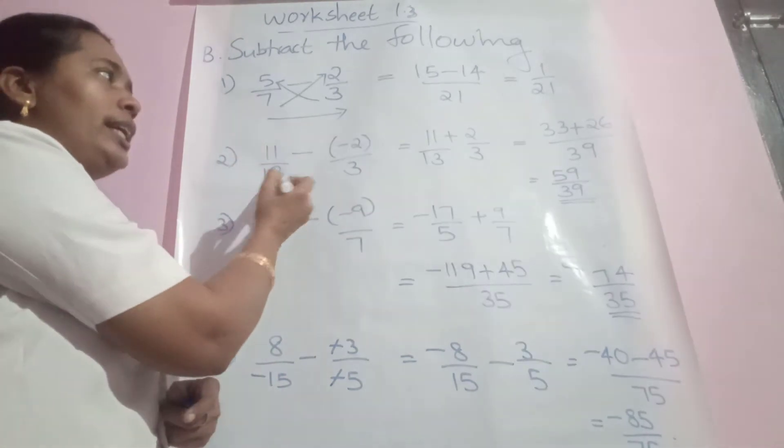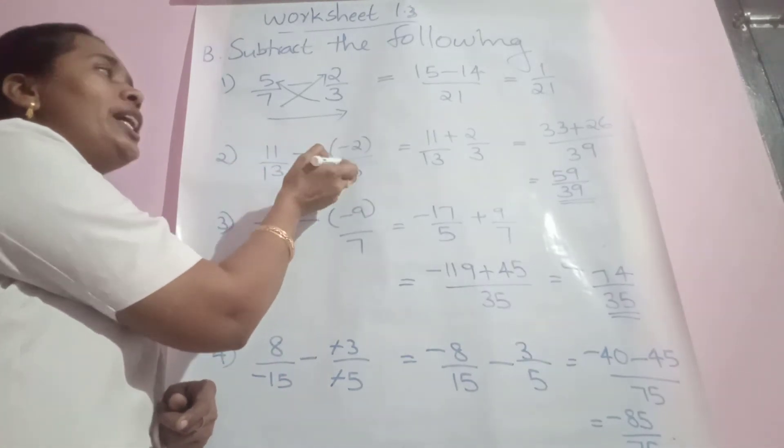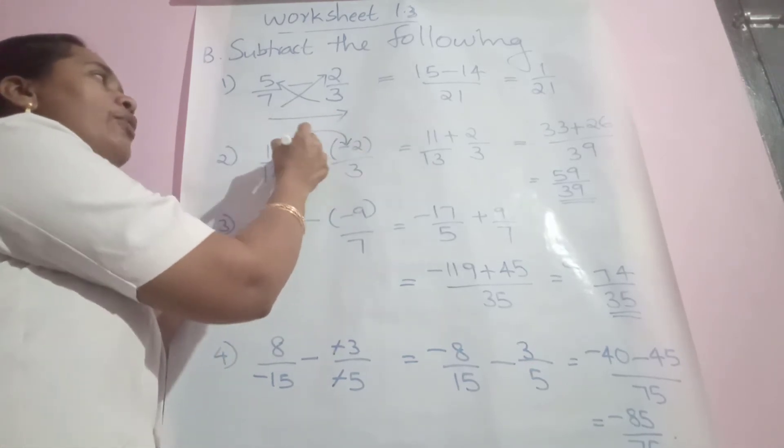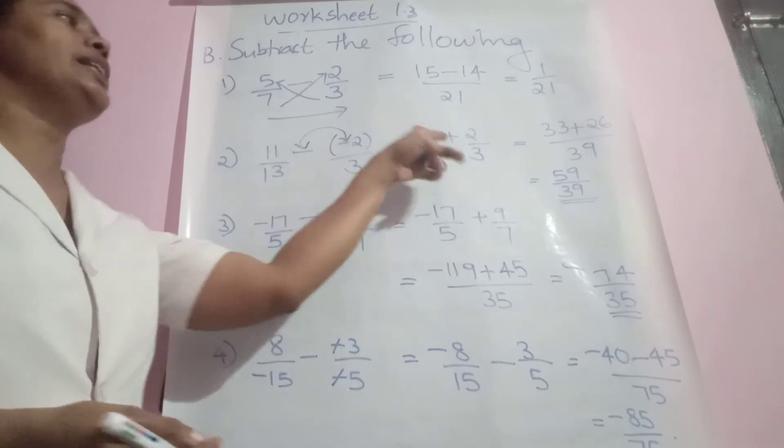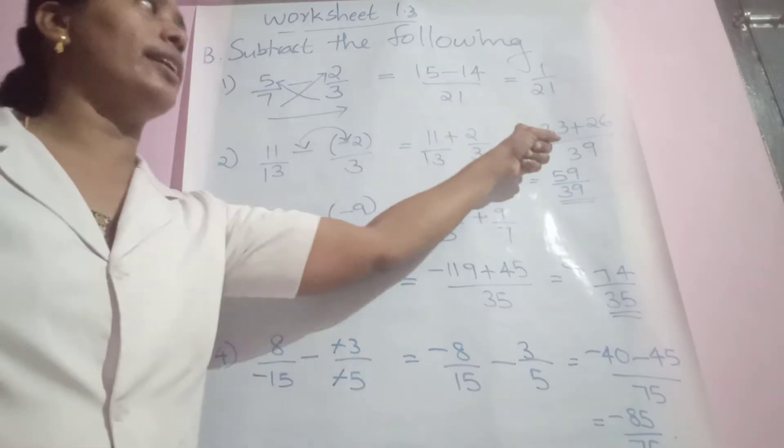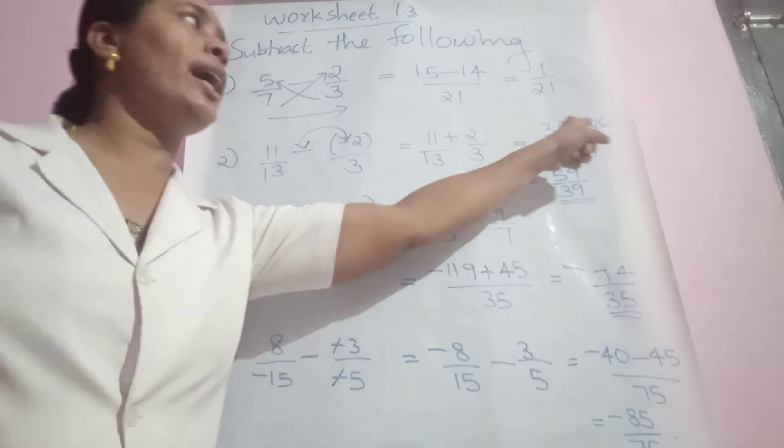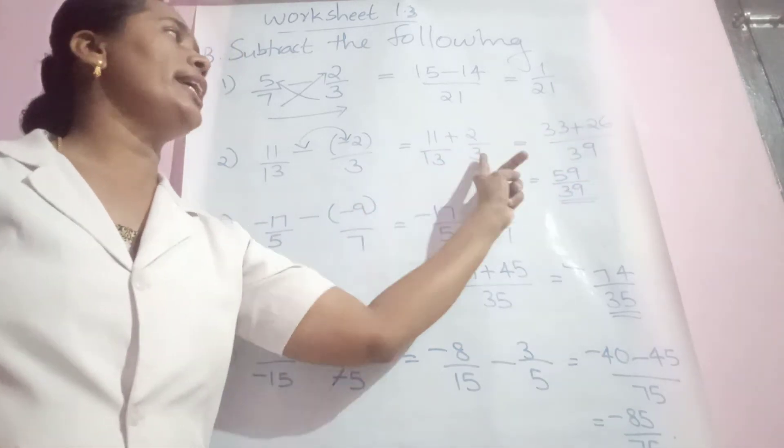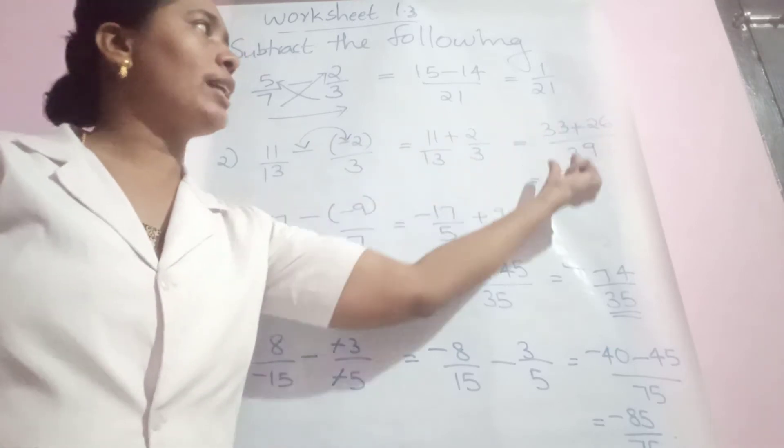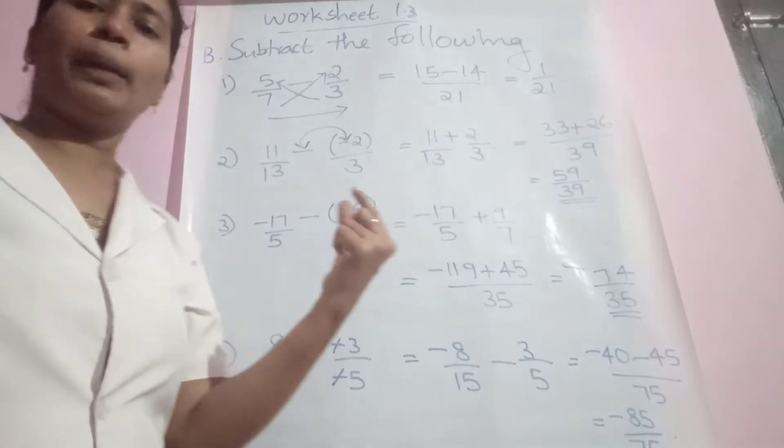11/13 minus (-2/3). Negative of negative becomes plus sign. Then apply cross multiplication. 11 times 3 is 33, 13 times 2 is 26, by 13 times 3 is 39. The sum of these two is 59/39. Finished.